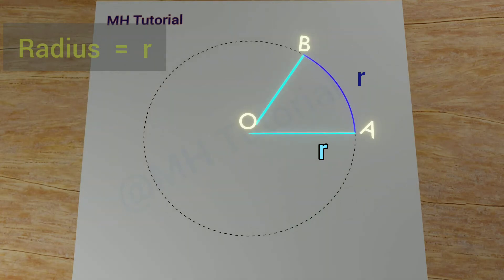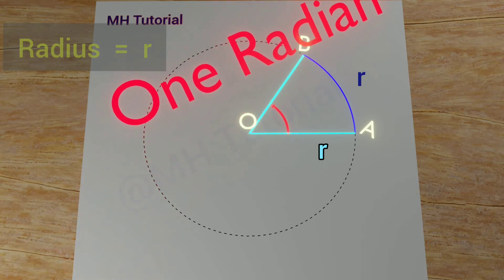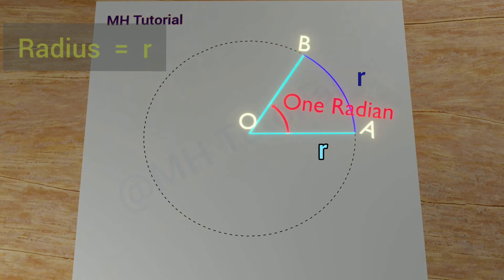Now connect B to O. Note that these two radii created an angle at the center of the circle. This angle possesses a value of one radian.